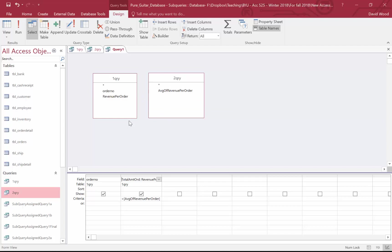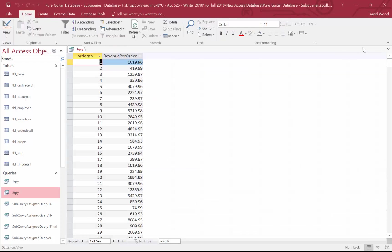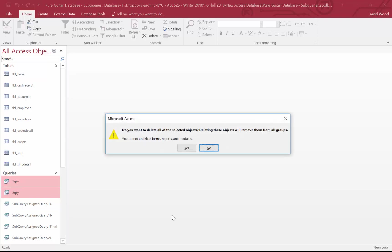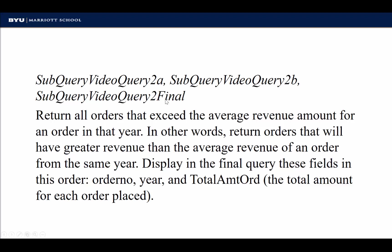Let's do another practice — I'm going to add one more wrinkle. Our next query: return all orders that exceed the average revenue amount for an order in that year. It's the exact same as the previous problem, except it's in that year — in other words, return orders that have greater revenue than the average revenue for an order from the same year.